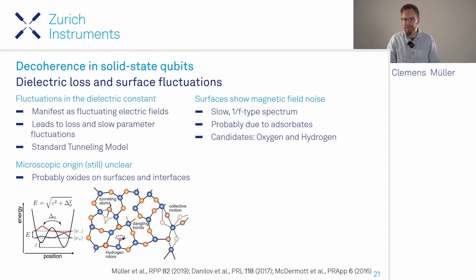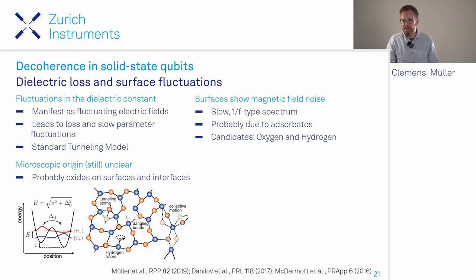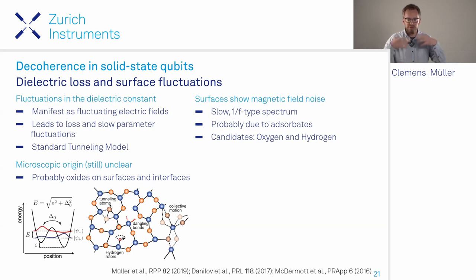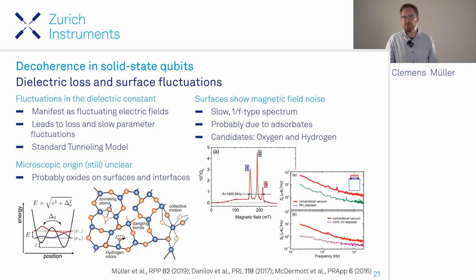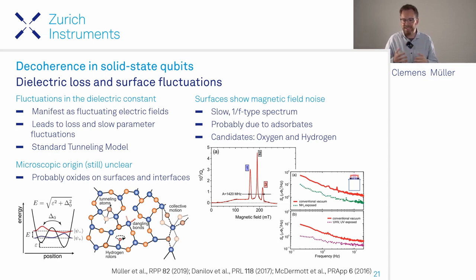Related to this, magnetic susceptibility measurements of surfaces show that surface magnetic fields also exhibit random fluctuations with a 1/f-type spectrum, most probably due to adsorbates—likely oxygen molecules and hydrogen atoms—adsorbed during cooldown from residual gases. One illustration shows a clear signal of hydrogen atoms measured in a superconducting resonator; another shows how surface cleaning can improve the 1/f magnetic noise spectrum.